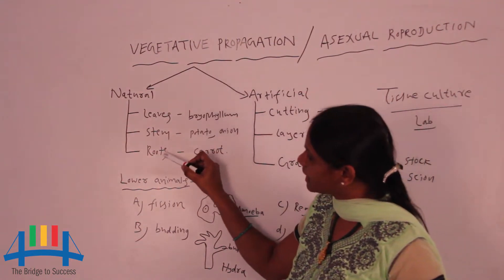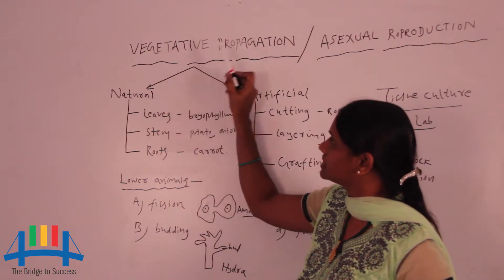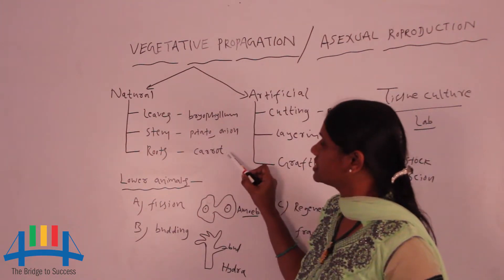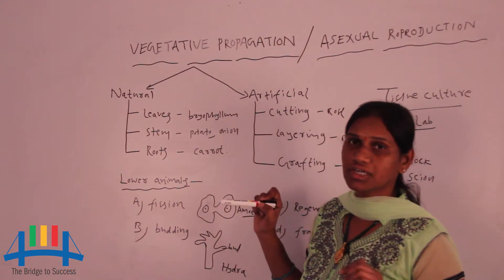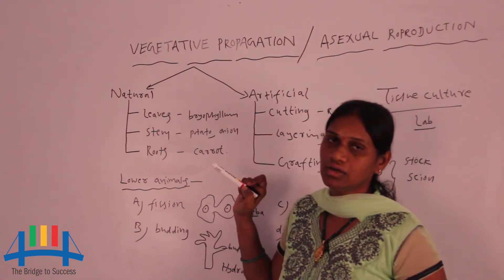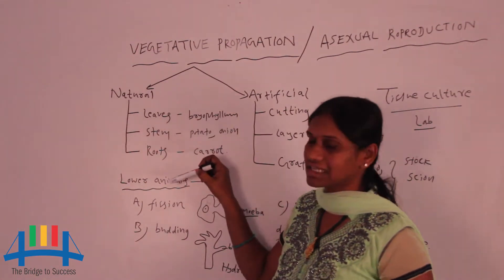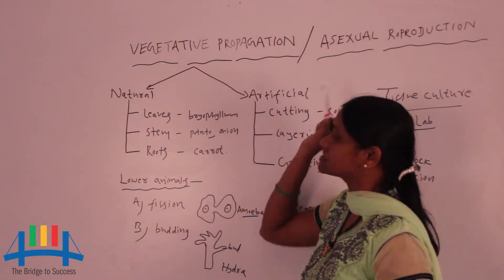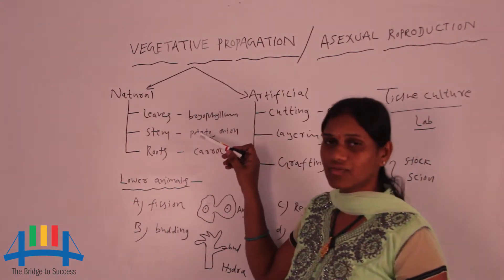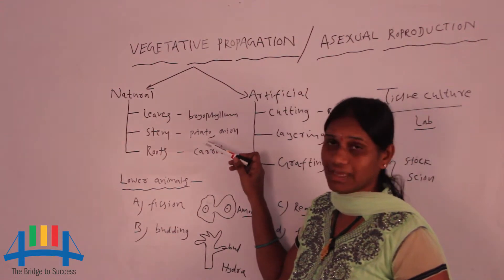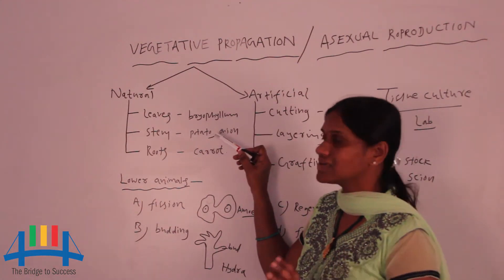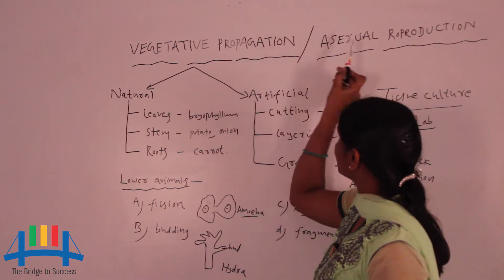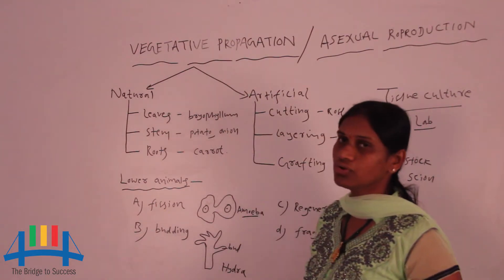One more natural method is through roots. Through roots, we can also get new plants naturally by asexual reproduction. An example is carrots — we get new plants from carrot through the roots. In all three ways, no flower, male or female gametes, or fertilization is involved. It is only the natural way by asexual reproduction or vegetative propagation.